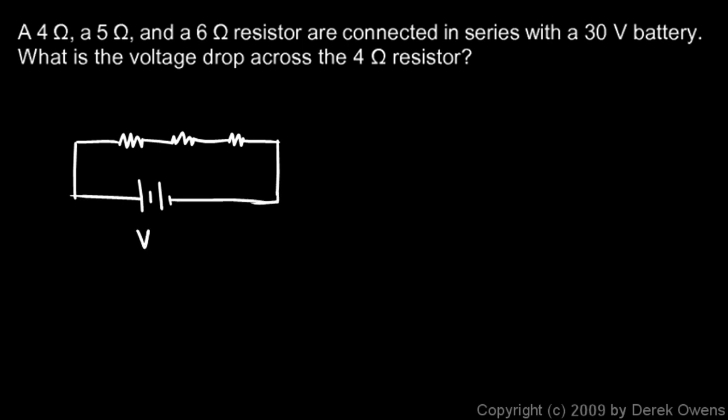So here's my voltage source, and we're told that that's 30 volts. And here's R1. I'll go ahead and write the numbers: 4 ohms, 5 ohms, and 6 ohms. We're told to find the voltage drop across the 4 ohm resistor, so we want to know the voltage here.